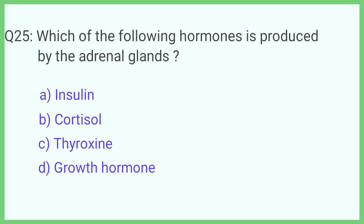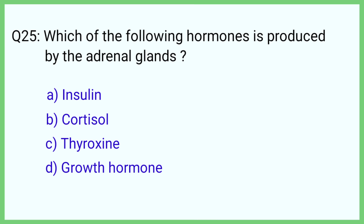Question number 25. Which of the following hormones is produced by the adrenal glands? The correct answer is option B: Cortisol.